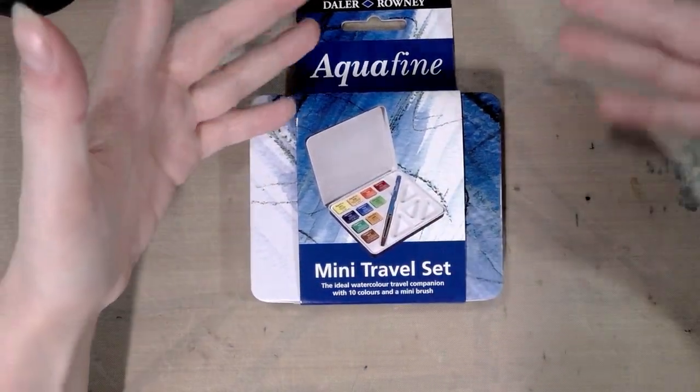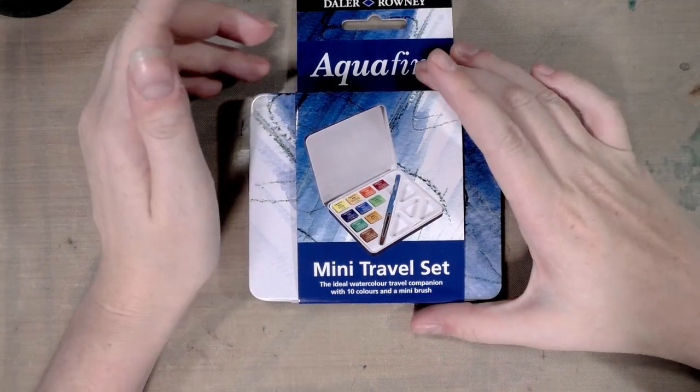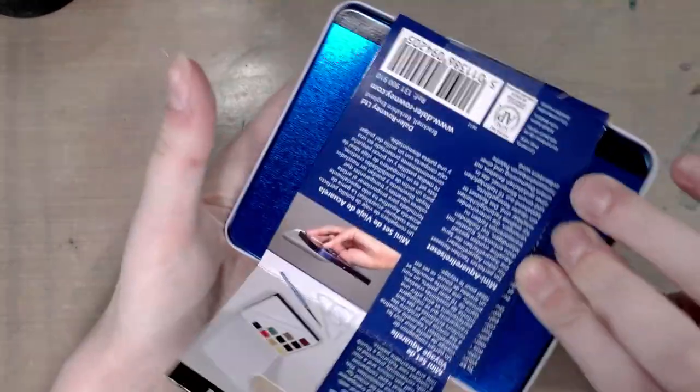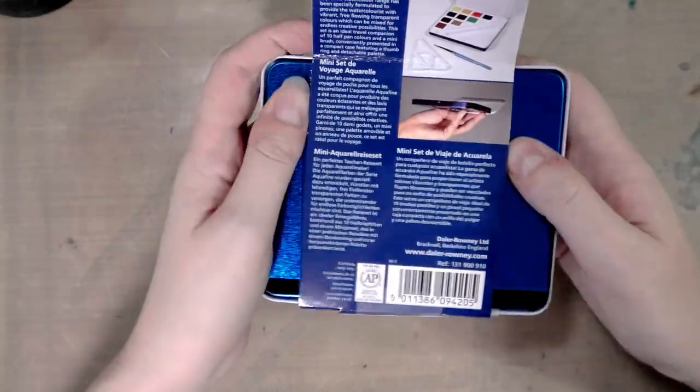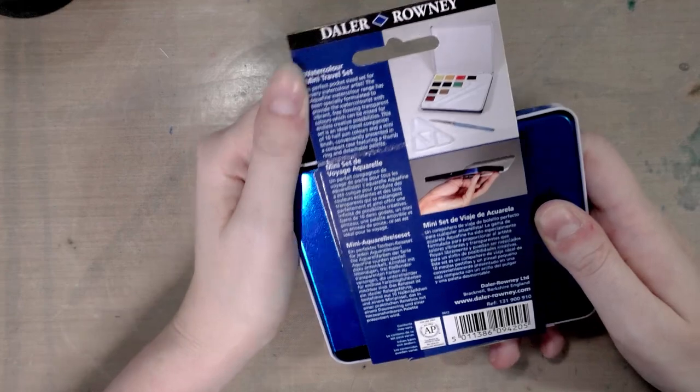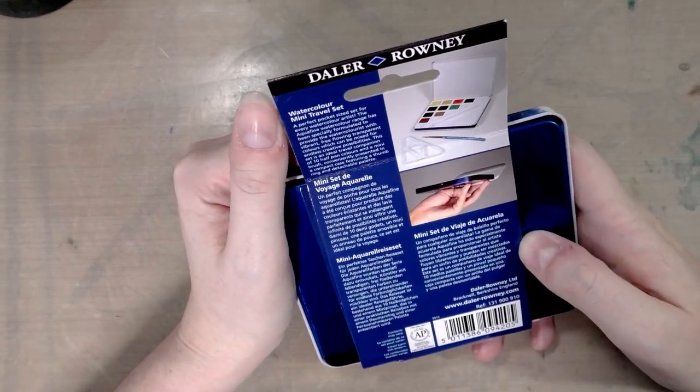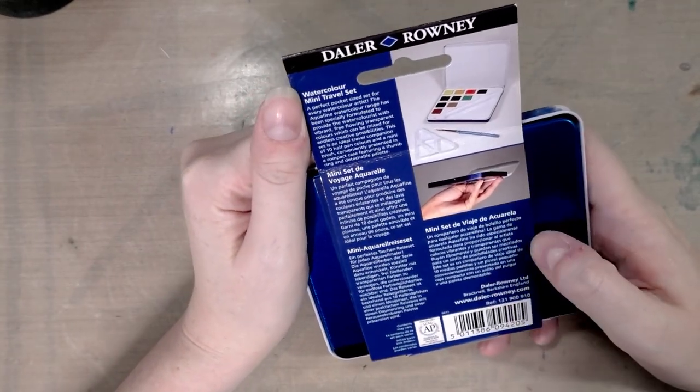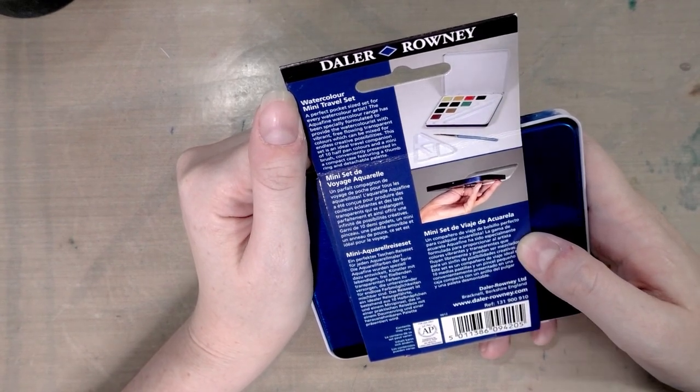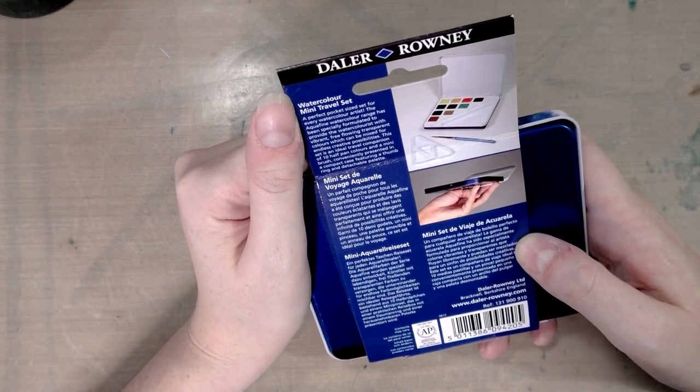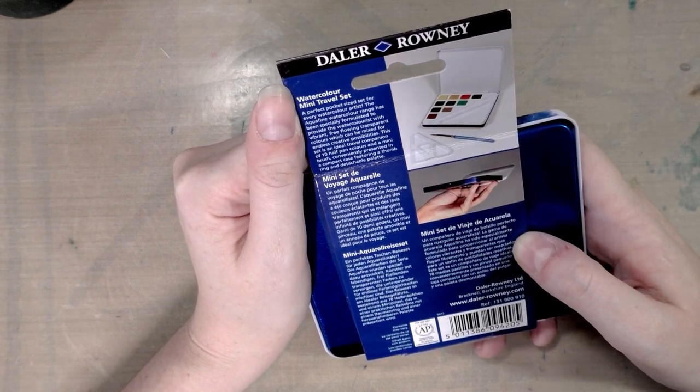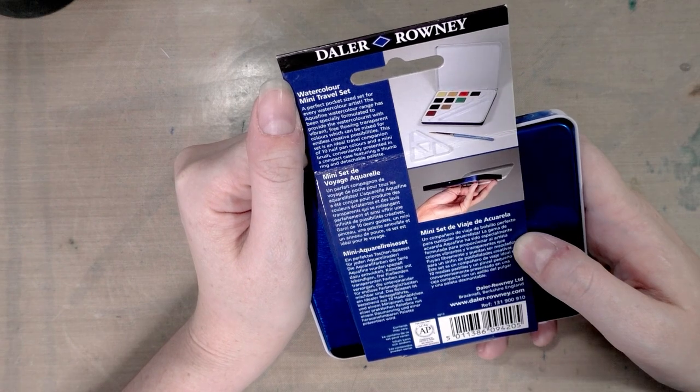It's also one of the smaller sets. We've got a little metal tin with some information. Let me read it to you: watercolor mini travel set, a perfect pocket size set for every watercolor artist. The Aquafine watercolor range has been specifically formulated to provide watercolorists with vibrant, free-flowing transparent colors which can be mixed for endless creative possibilities.